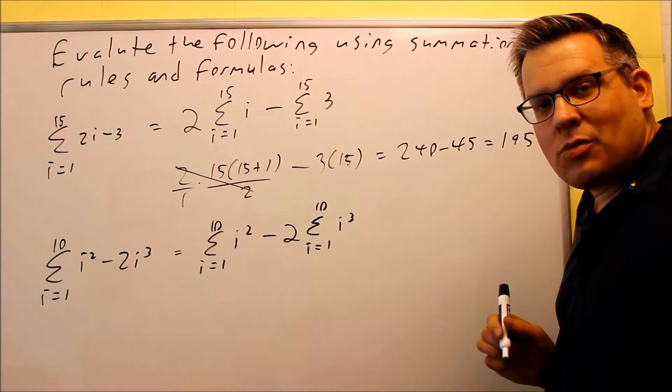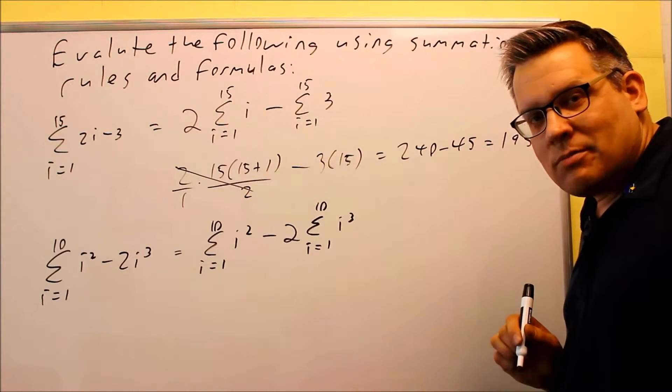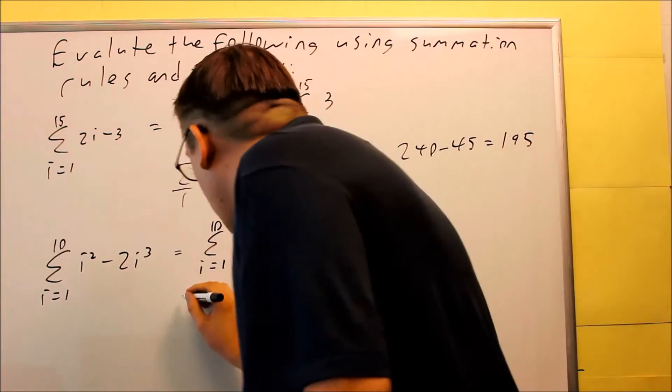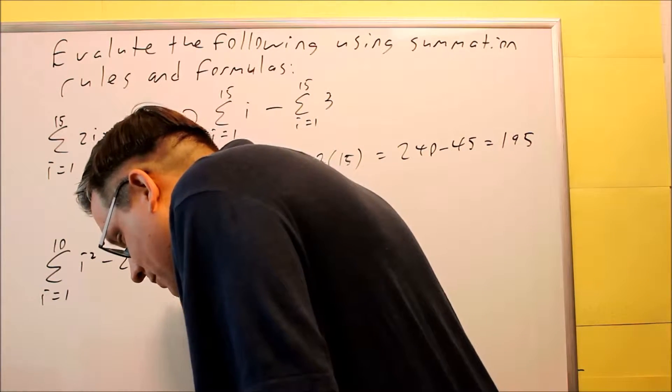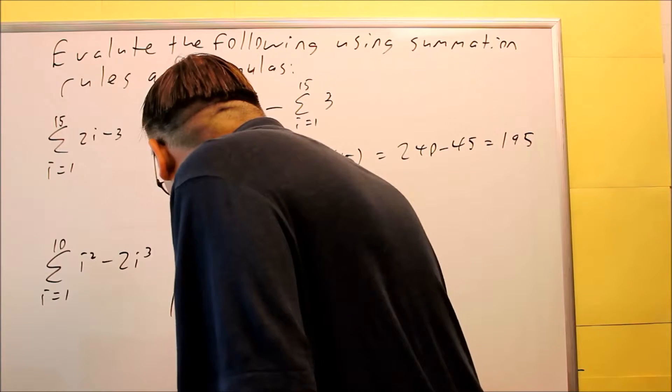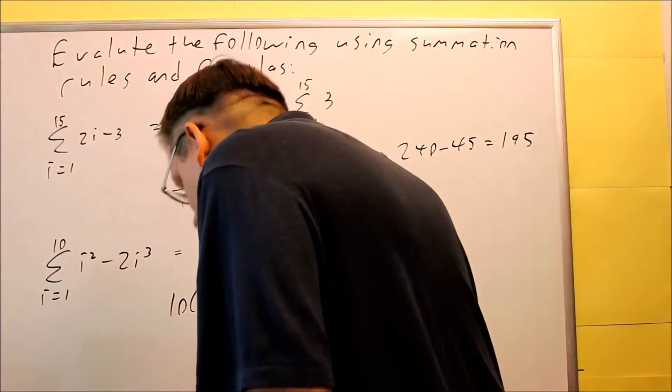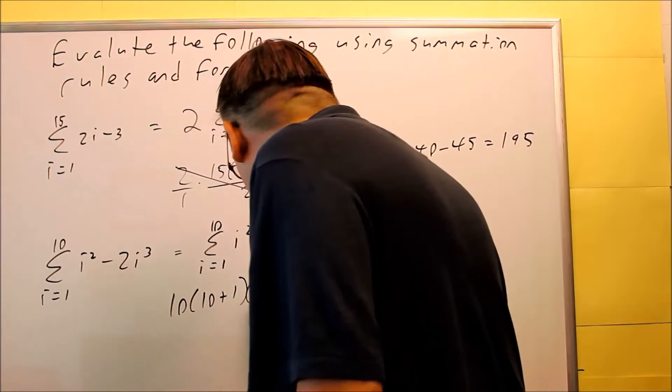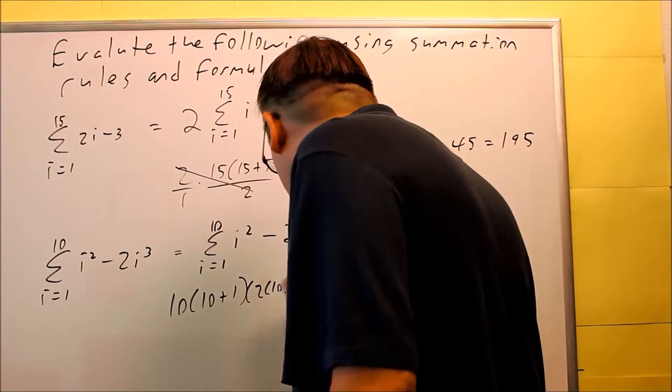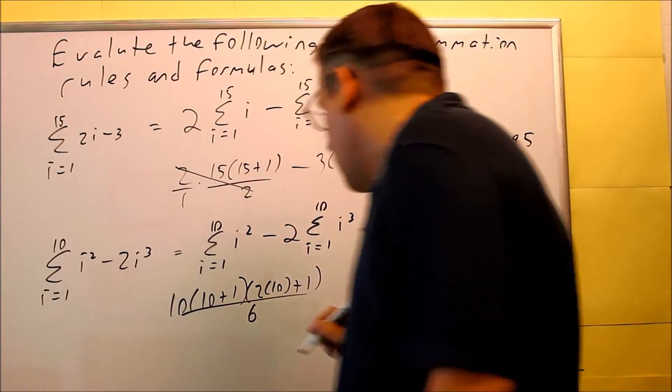In this case, the n is going to be equal to 10 in this case. So, we start with the first one. It's going to be 10, 10 plus 1, and then we have 2 to 2n plus 1, so 2 times 10 plus 1. All that over 6.